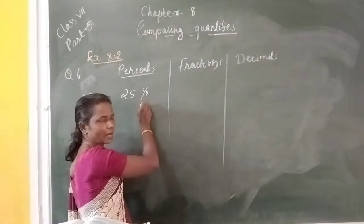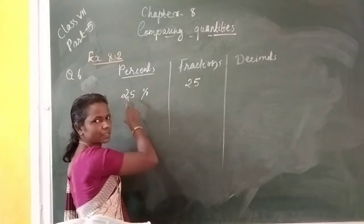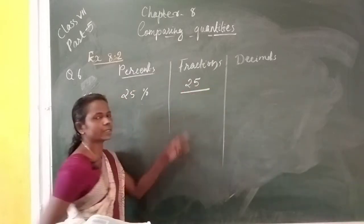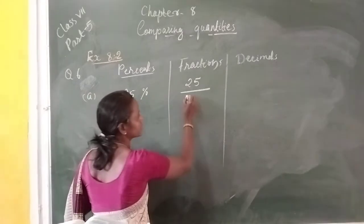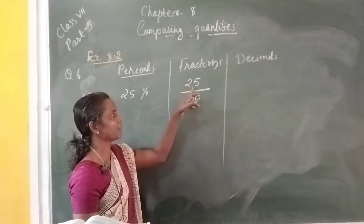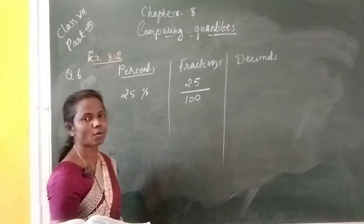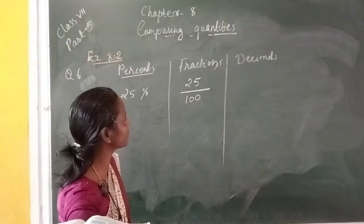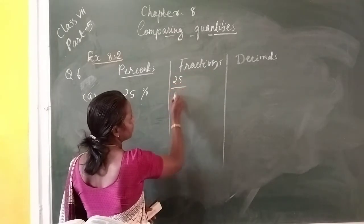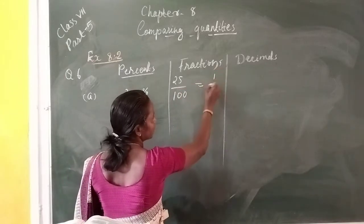How to write its fraction form? This percentage — how many percentage? 25. This 25, you write as the numerator. And what is its denominator? Its denominator is 100. So its fraction form is 25 by 100. And we write this in simplest form. What is its simplest form? It is equal to 1 by 4.